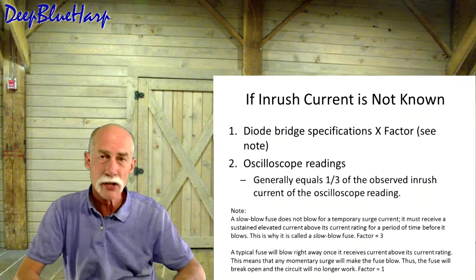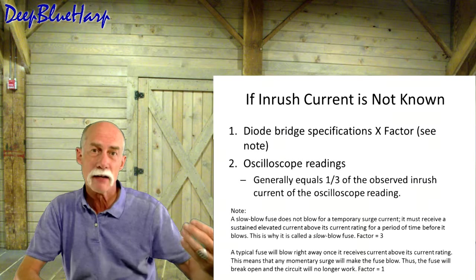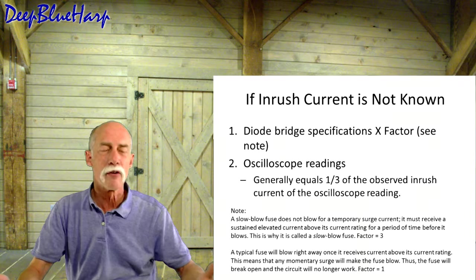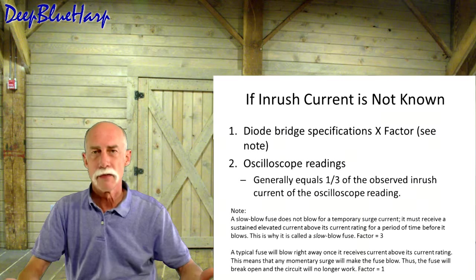If the inrush current is not known, what do we do? We look at the bridge diode specification. They will tell you what they're expecting for the inrush current, and also something about the fuse. If the fuse is 5 amps, they're expecting something related. The inrush current will be related to the fuse. Or you can get an oscilloscope reading. Let's go back to the fuse.